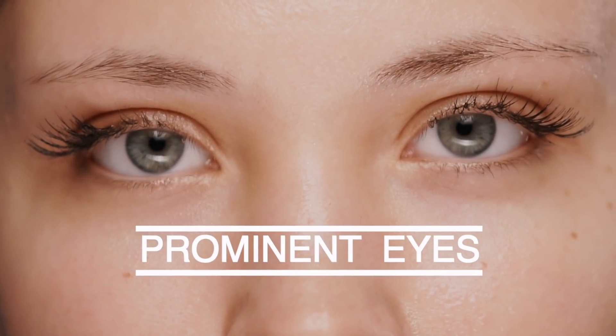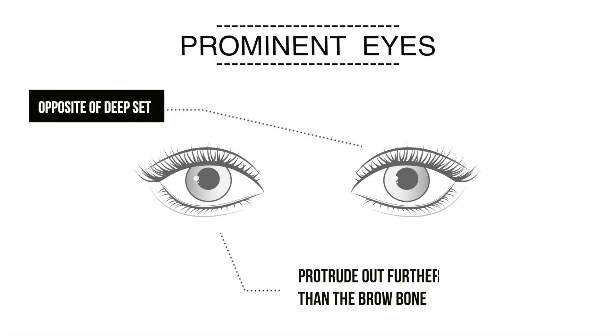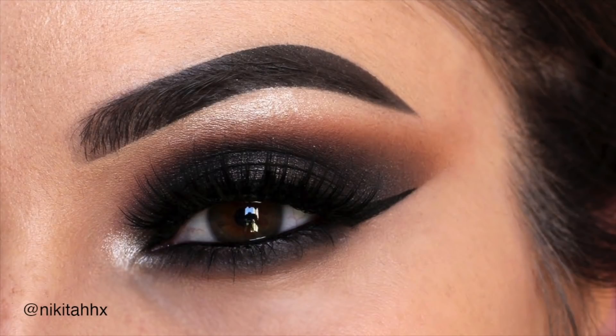Next we have prominent eyes. Your eyes may be prominent if they protrude out farther than your brow bone — the opposite of deep set eyes. Prominent is where your eyeball itself is coming out further than your brow bone. That eye shape can pull off a dark smoky eye; you can wear dark shadow all over the lid. You wanna smudge it here under the lower lash line. I have a little bit of prominent eyes — there's a little shelf under there because my eyes come out. So I always smudge some shadow underneath because that's gonna push the eyes back a little bit, making them less prominent.